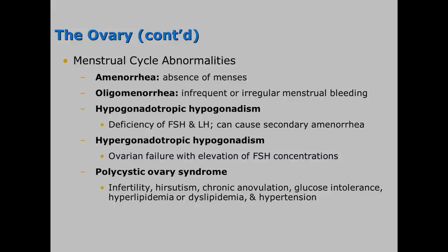Polycystic ovarian syndrome is somewhat common. These patients tend to be obese, and we see infertility, hirsutism, chronic anovulation, glucose intolerance, hyperlipidemia or dyslipidemia, and high blood pressure.